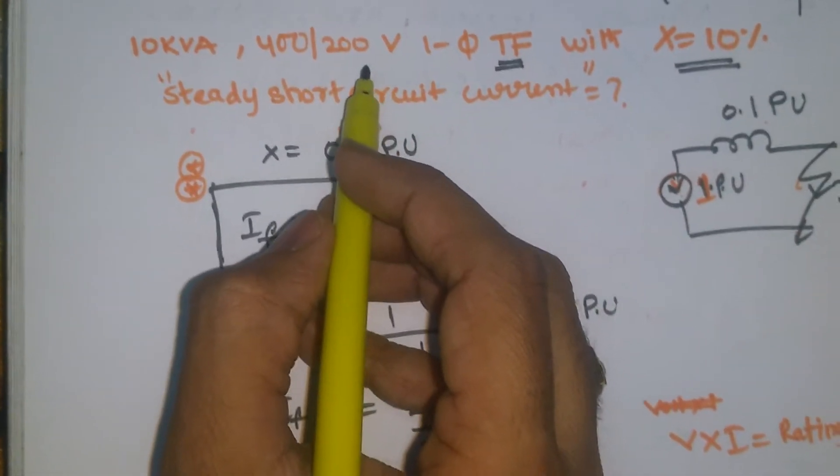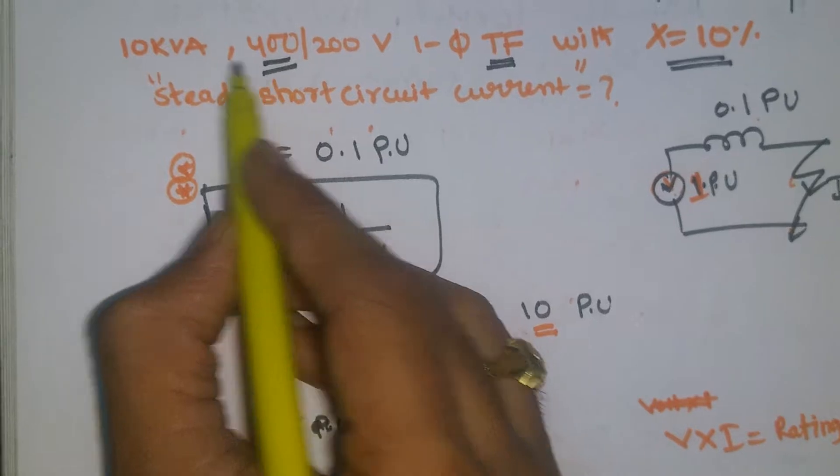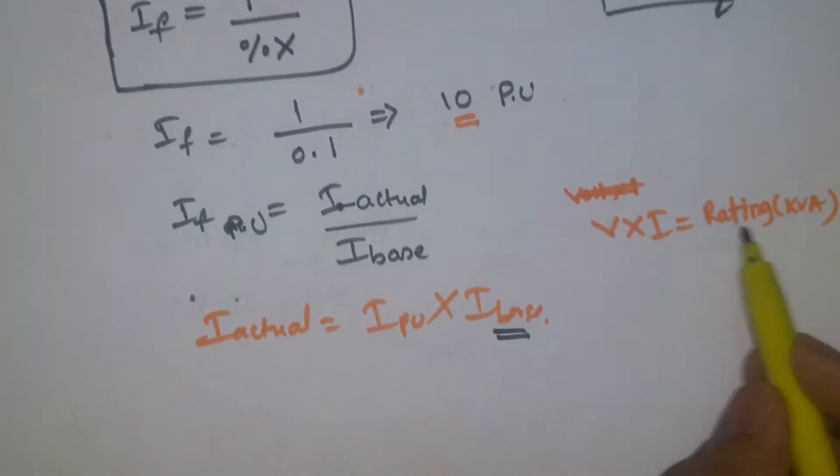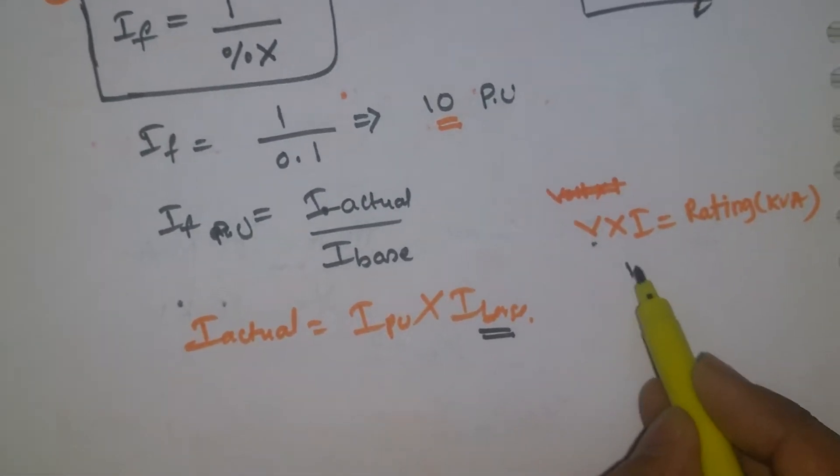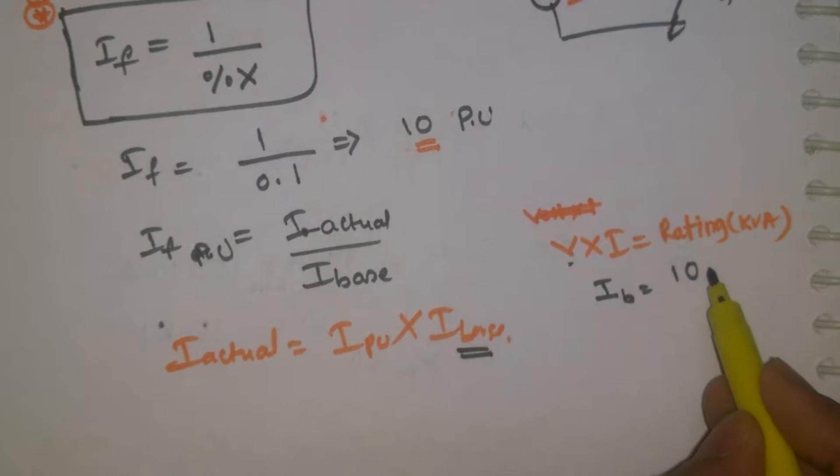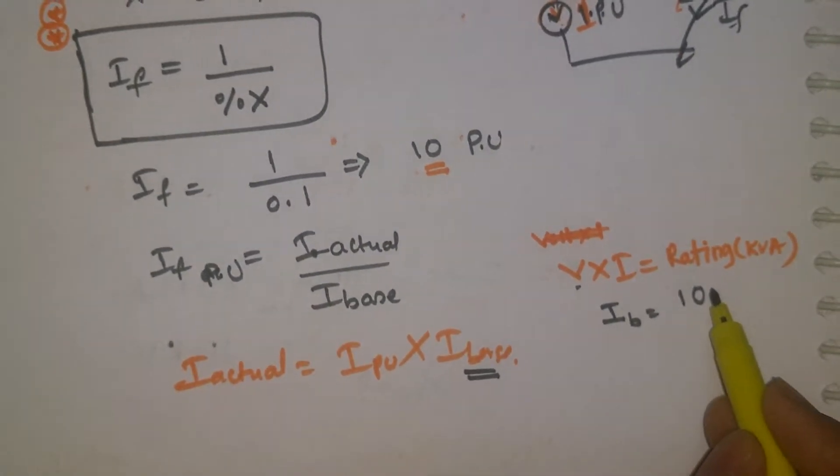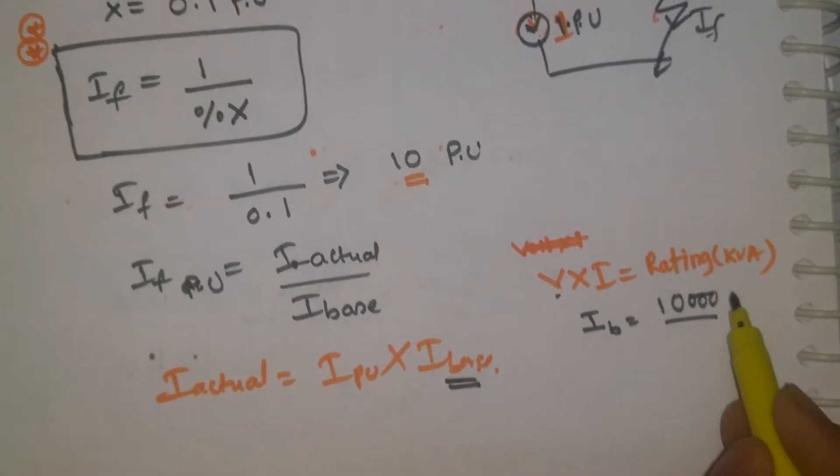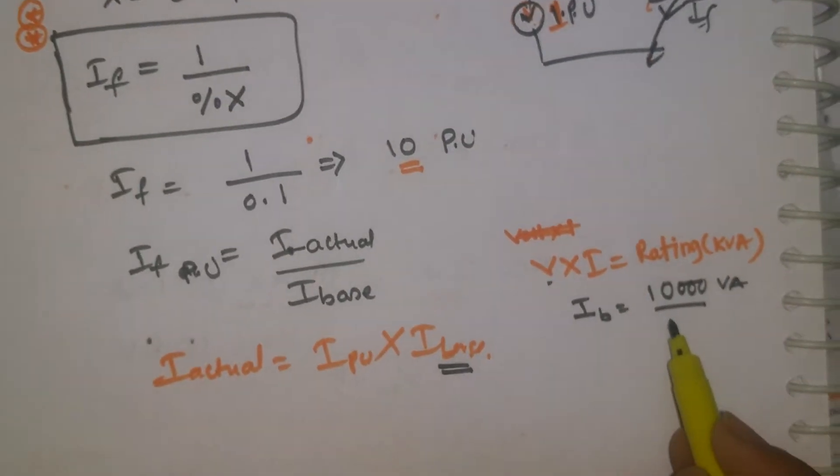I am considering for the primary side. Rating is V into I. I need to find the base value. What is the rating? 10 kVA, so 10,000.